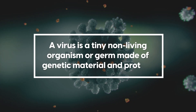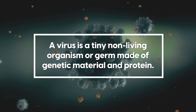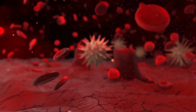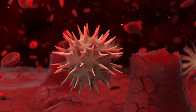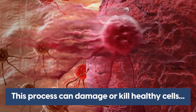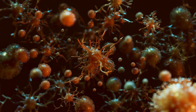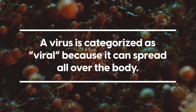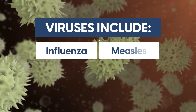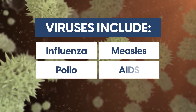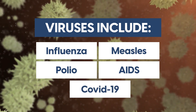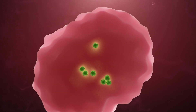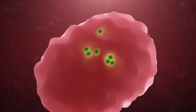A virus is a tiny non-living organism, or germ, made of genetic material and protein. This germ colonizes a healthy cell in the body, which triggers its reproduction. This process can damage or kill healthy cells, leading to disease. As such, a virus is categorized as viral because it can spread all over the body. Viruses include influenza, measles, polio, AIDS, and COVID-19, among others. However, when a virus can't bind to a healthy cell and use it as a host, it cannot spread and it stays dormant.